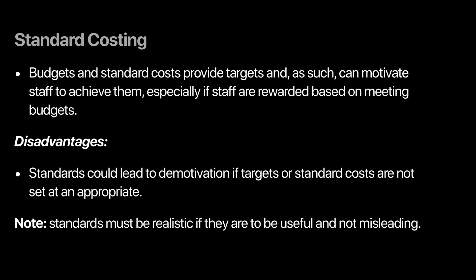Budgets and standard costing are also part of giving out targets — they can motivate staff, as discussed earlier in budgeting. Rewards can be based on performance, and efficiency is compared through variances, so someone with positive variances can be rewarded accordingly.